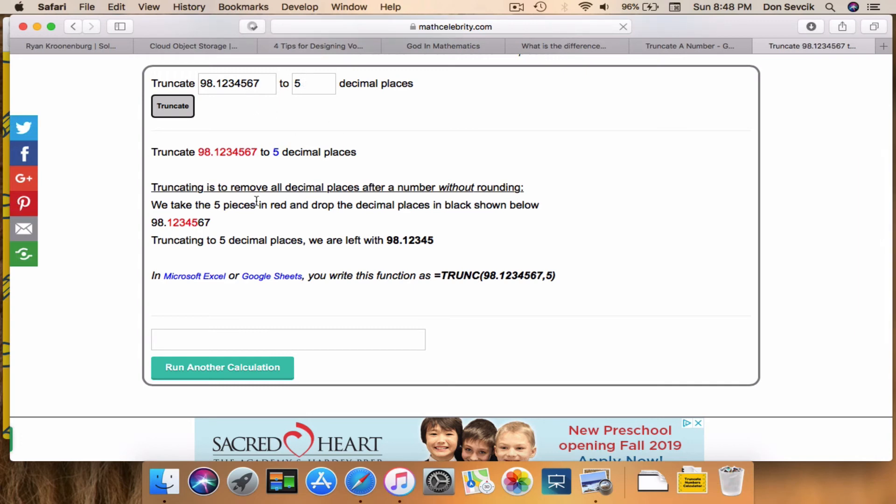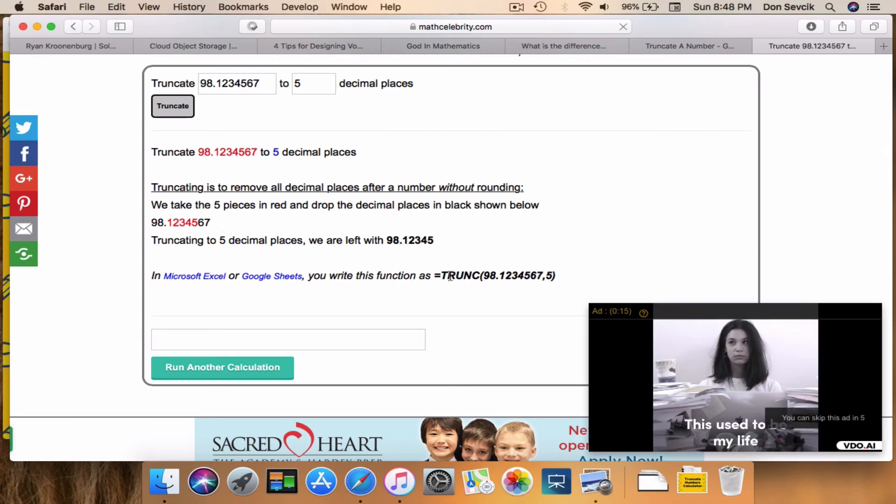So it runs your new problem. Here's the number, here's the decimal places. It's going to chop off everything after the red, show you the truncated number, and show you how to do it in Excel or Google Sheets. It's that fast and that simple.